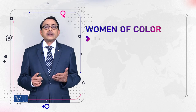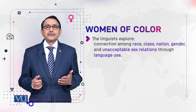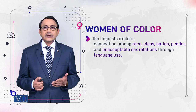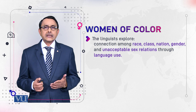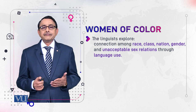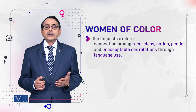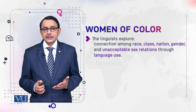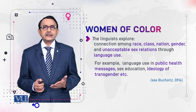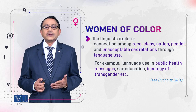In conclusion, we can say that there are more than one issues involved in gender discrimination. One is class, the other is race, and the other is nation. All these things together create gender discrimination. For example, language used in public health messages, sex education, and the ideology of transgender.